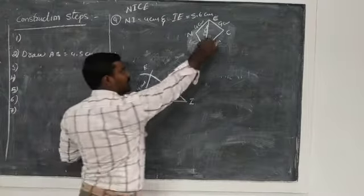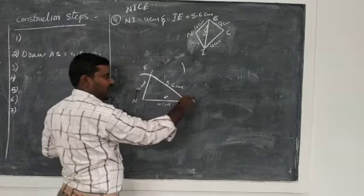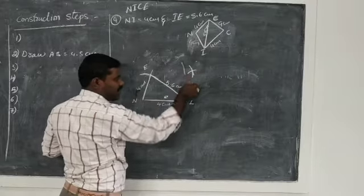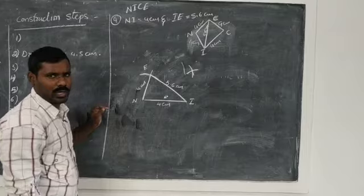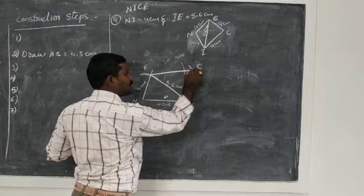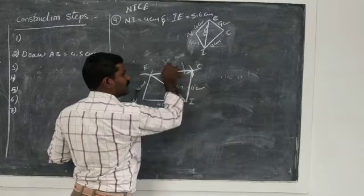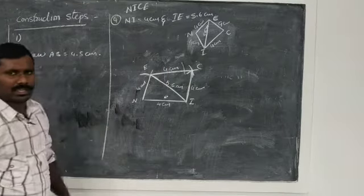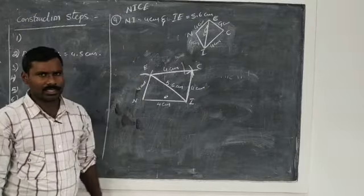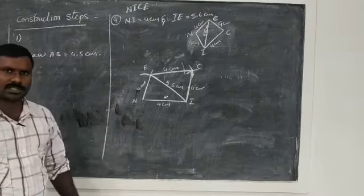Again take 4 centimeters radius and draw one arc with center E and also with center I. Both arcs intersect at C. Join EC and CI, each 4 centimeters. Now we have the required rhombus NICE with diagonal IE. You already know the construction steps — write them on your own.